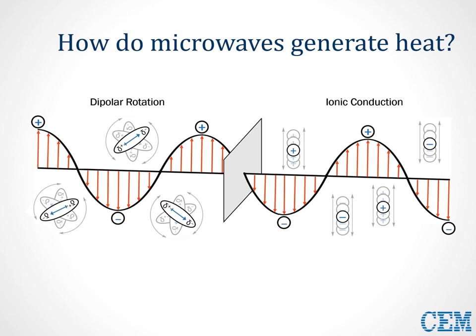If a molecule is charged, then the electric field component of the microwave moves the ions back and forth throughout the sample. This movement is called ionic conduction, and it also generates heat. The electric field generates ionic motion as the molecules try to orient themselves with that electric field. The temperature of the substance also affects ionic conduction — as your temperature increases, the transfer of energy becomes more efficient.